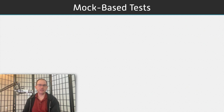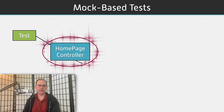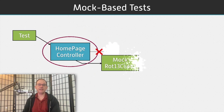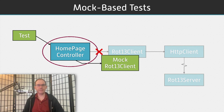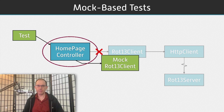Mock-based tests use dependency injection to isolate the code under test from its dependencies. Instead of running the real dependency, now your code runs the injected mock or spy. This results in tests that are fast and reliable, but now they're not checking that the whole system really works together. It leads to problems when you refactor.